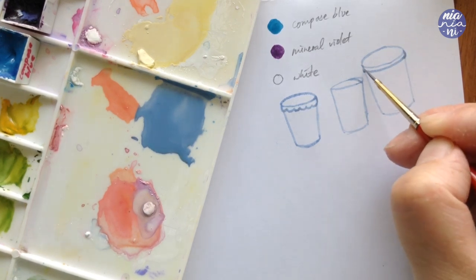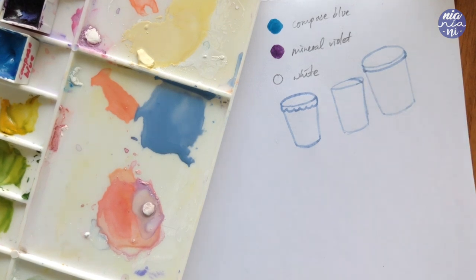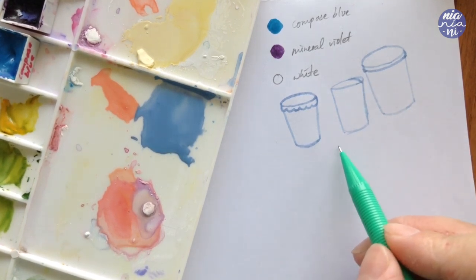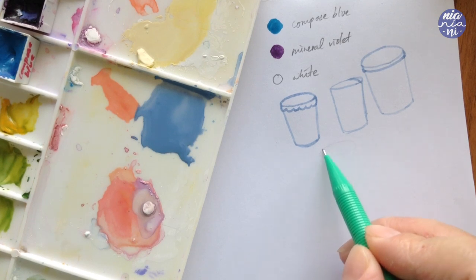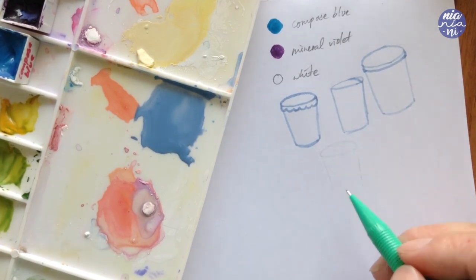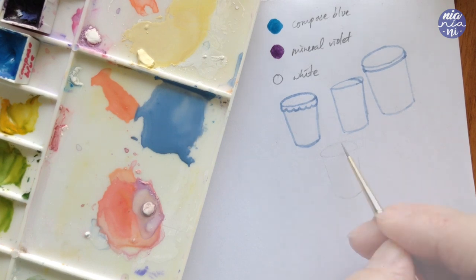You can also use the opportunity to practice your brush control with your small brush. If you don't want to paint it freehand, you can also sketch it out first with pencil very lightly, then you can paint over the lines.